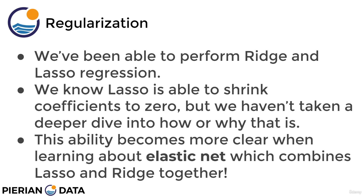We just told you that the penalty term — the sum of the absolute values — happens to allow you to put coefficients all the way to zero. Now the ability behind its capability to actually shrink down to zero becomes more clear when we begin to learn about elastic net, which is going to allow us to combine lasso and ridge together. So let's start by actually diving a little deeper into lasso and ridge separately.